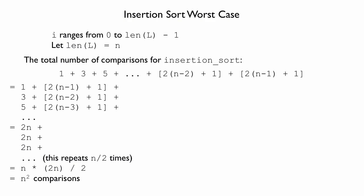n squared comparisons means that insertion sort, in the worst case, is a quadratic runtime function. This may seem counterintuitive because different numbers of comparisons happen at each stage, but the math is there. If n doubles, the number of comparisons quadruples. If n triples, the number of comparisons is multiplied by 9. This is a quadratic running time function.